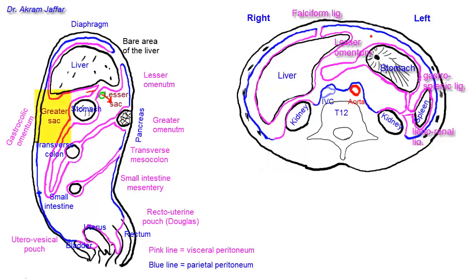Here is the greater sac of peritoneum, and the lesser sac is located behind the stomach and the lesser omentum. The lesser sac has an opening located between the free border of the lesser omentum and the inferior vena cava posteriorly. This opening is the epiploic foramen — the same opening described in the sagittal section — and the arrow passes from the greater sac into the lesser sac.